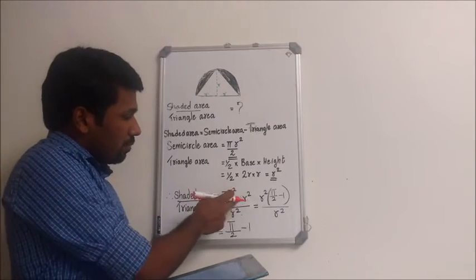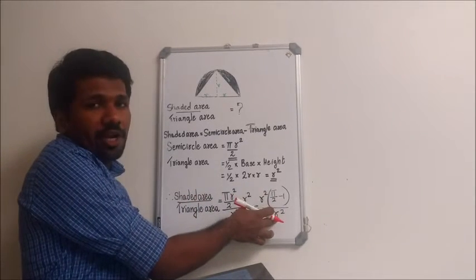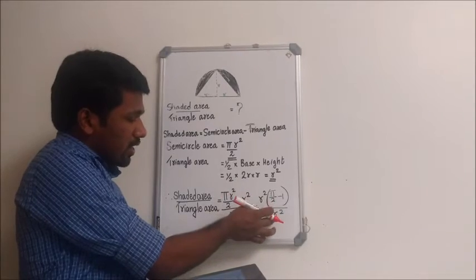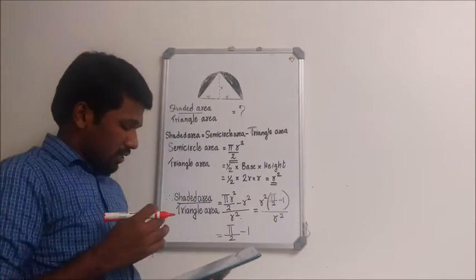This r squared can be taken common in the numerator and there is an r squared in the denominator. Cancelling this r squared and this r squared, we will get the answer as π by 2 minus 1, that is option 1.